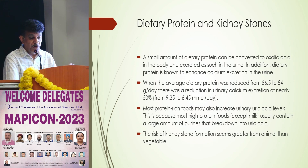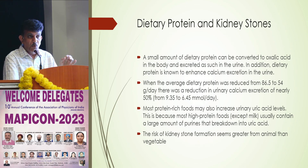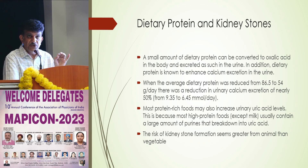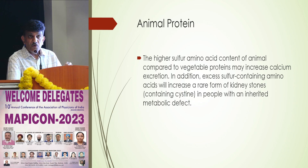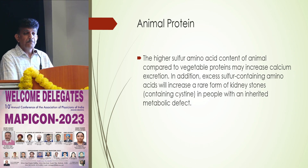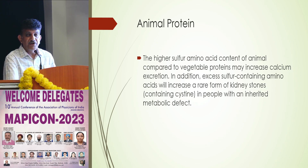Avoid high-protein diets. Reducing protein intake from around 90 grams to 50 grams can lead to a 50% reduction in stone formation. Most high-protein foods are of animal origin and can break down in the body to form purines, leading to uric acid stone formation or cystine stone formation. The risk of kidney stone formation is greater with animal protein than with vegetarian protein. Avoid red meat, especially mutton. Chicken can be advised at most once weekly. Animal protein also has high sulphur content, leading to cystine stone formation.